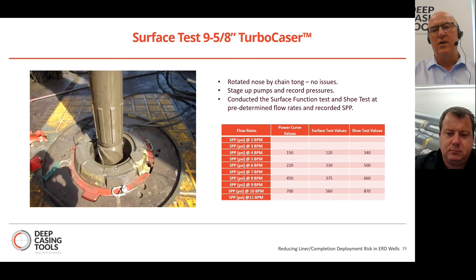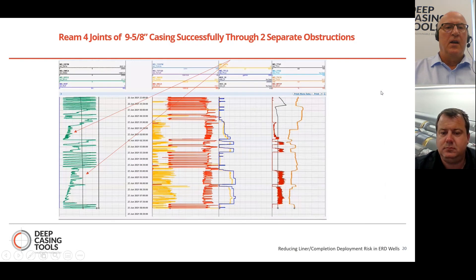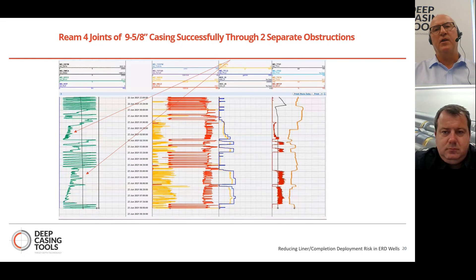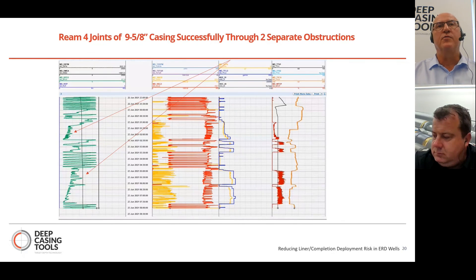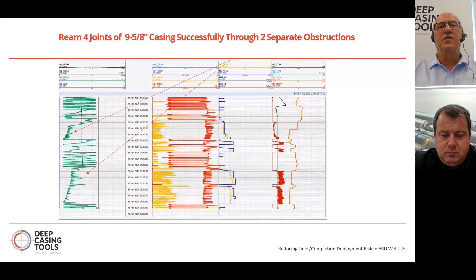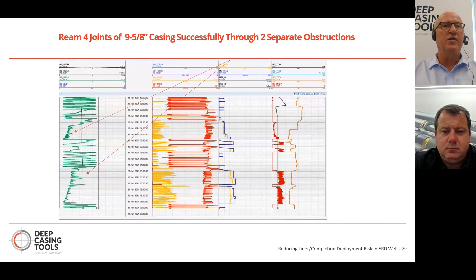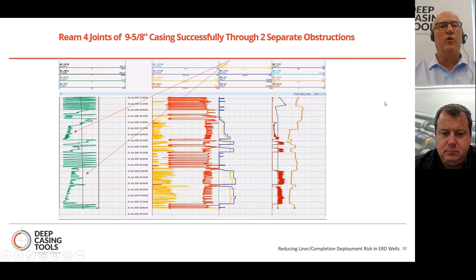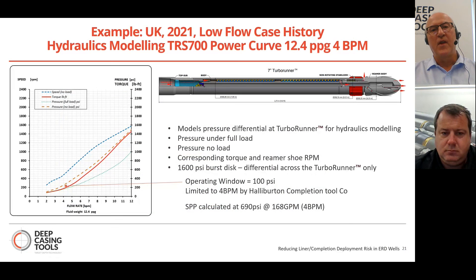Here's a case history where we ran a 9-5/8" Turbo Caser into a 12-1/4" hole on a long ERD well section in the Middle East. We came across obstructions on four occasions. Each time, we picked up, built up the flow, moved the Turbo Caser against the obstruction, and worked our way through, eventually getting that long casing string down to TD. Our client told us this saved them over a million dollars by not having to pull the casing, do a wiper trip, and rerun it — along with all the associated issues we discussed earlier.